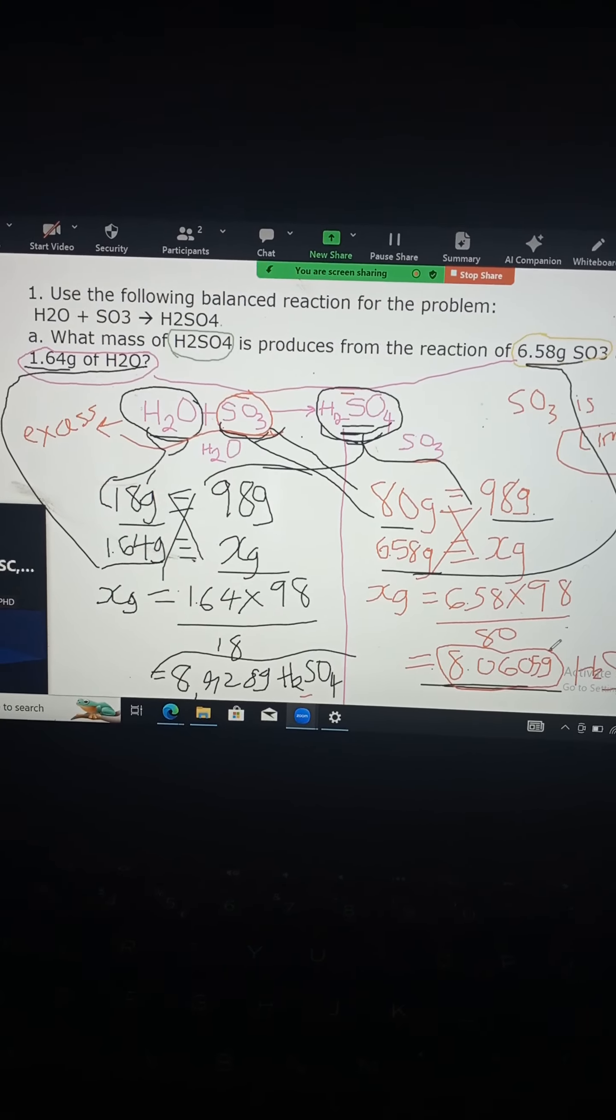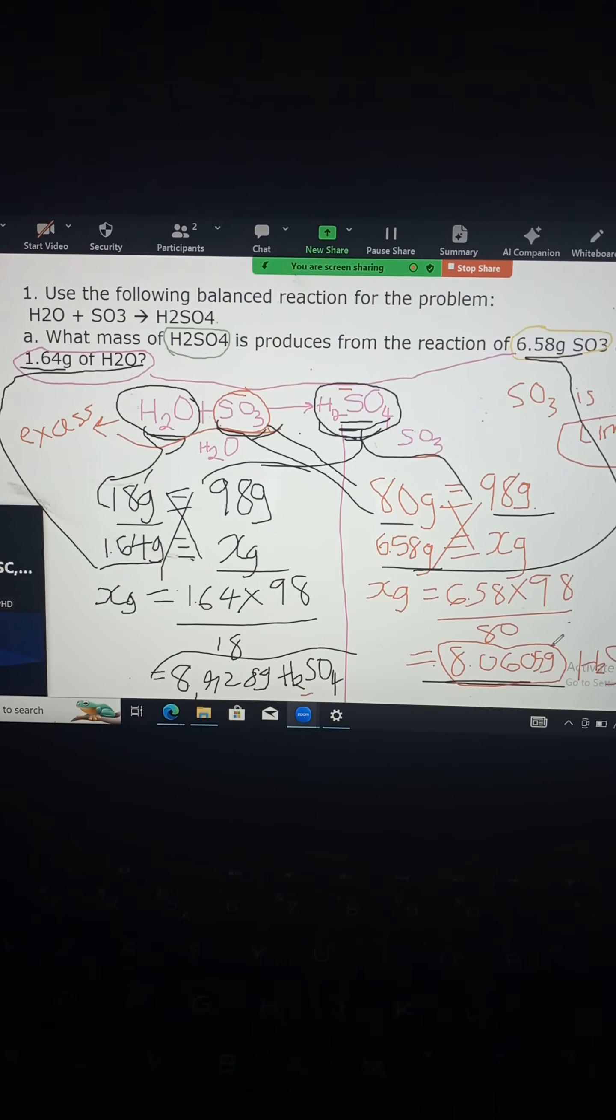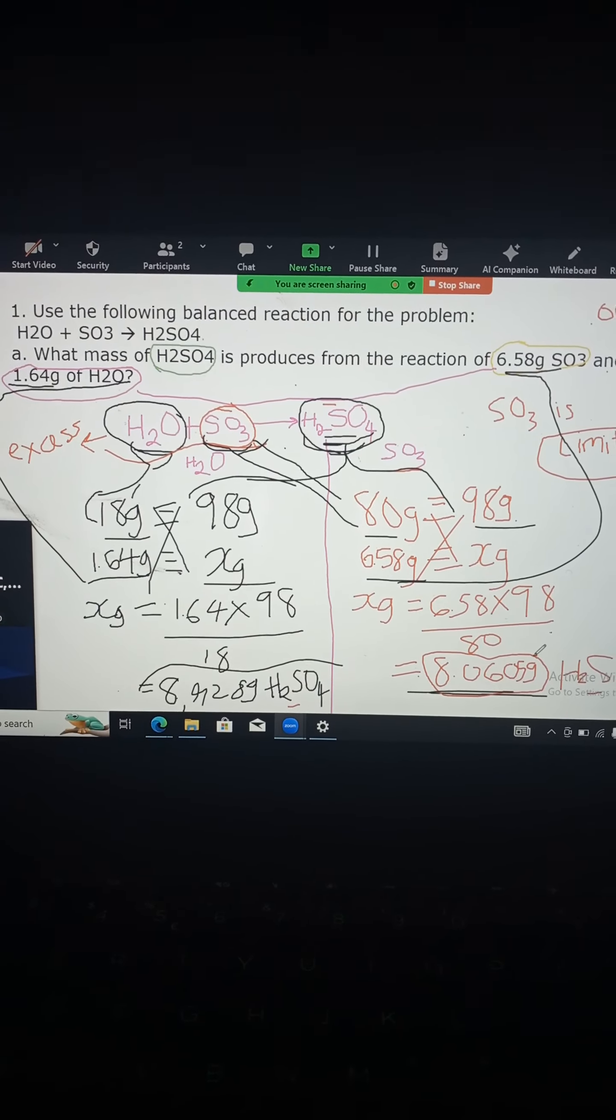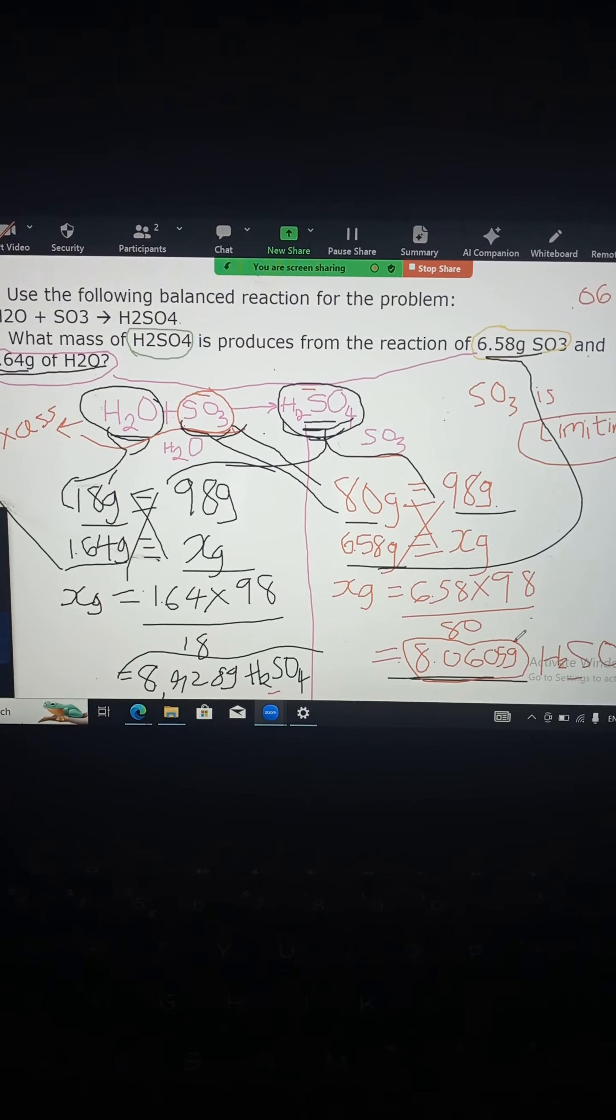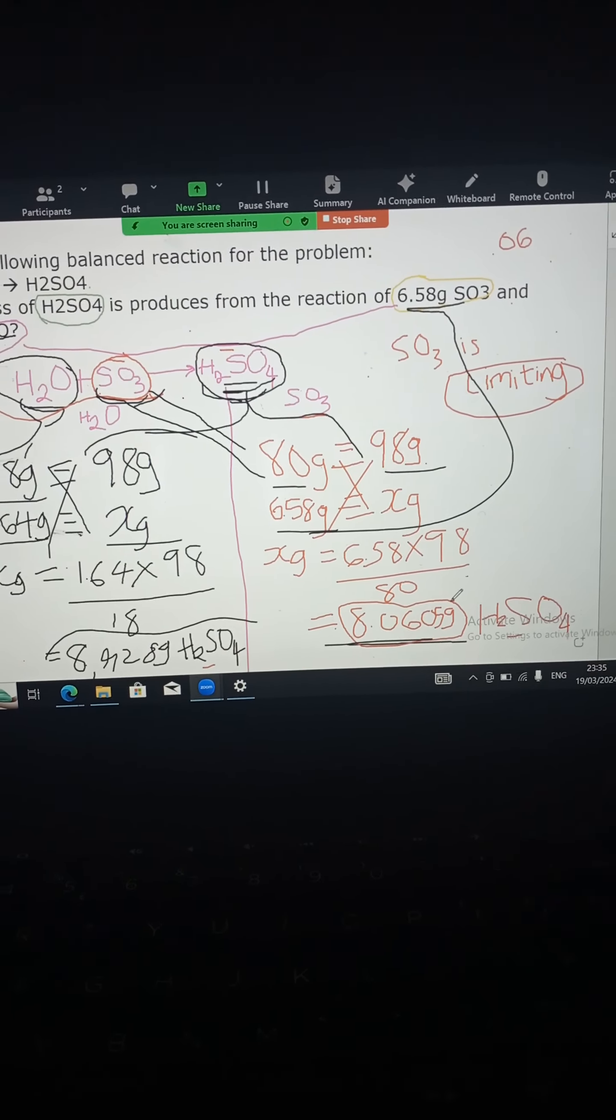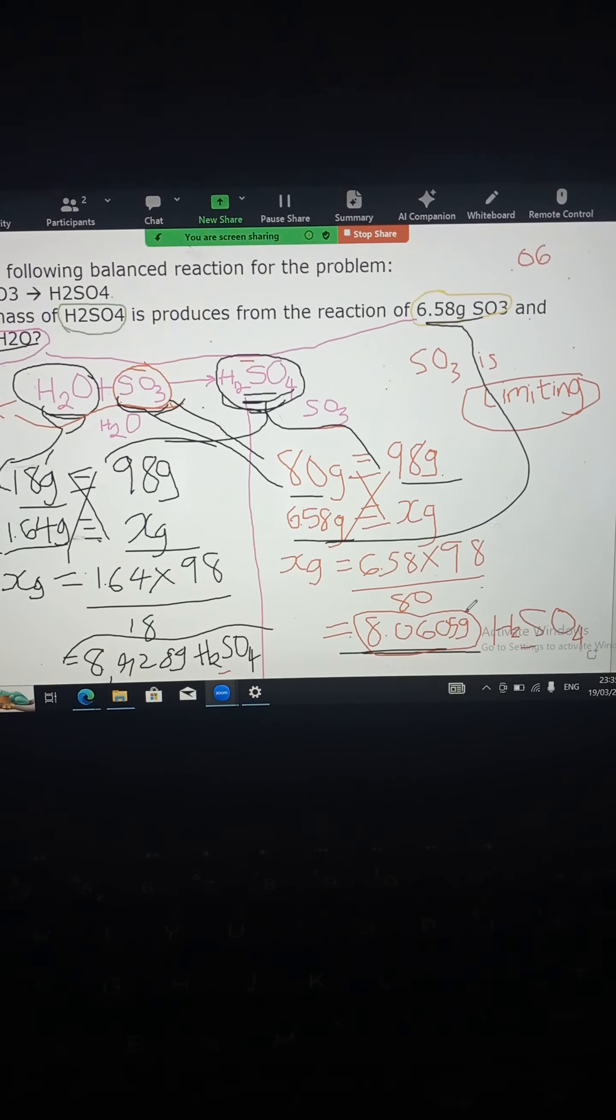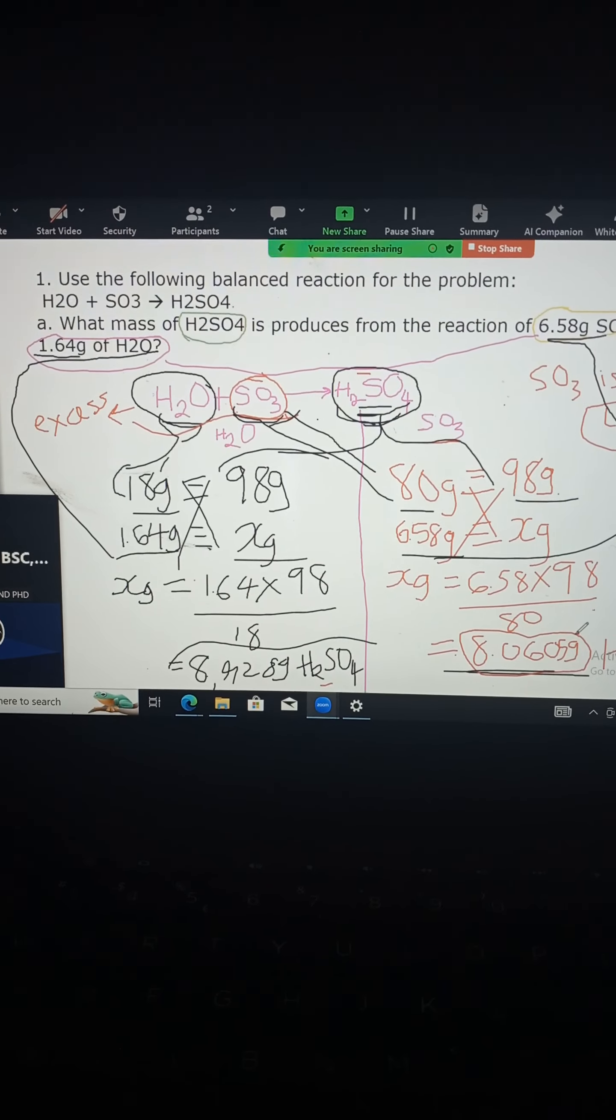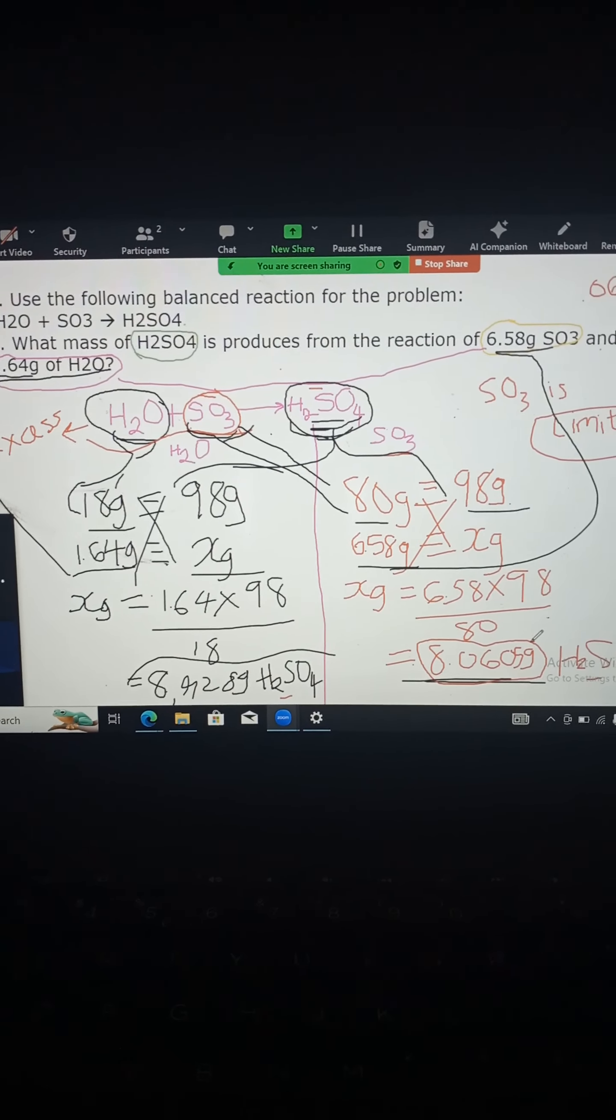Yeah. So the question now says, what mass of H2SO4 is produced, like is formed or is produced from the reaction of 6.58 gram SO3 and 1.64 gram of H2O. So, is that alright?